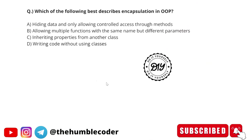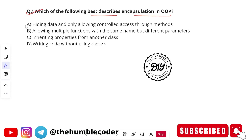Here is a question for you based on what we've studied. Write your answer in the comment box. Which of the following best describes encapsulation in OOP? Option A: hiding data and only allowing controlled access through methods. Option B: allowing multiple functions with the same name but different parameters. Option C: inheriting properties from another class. Option D: writing code without using classes.